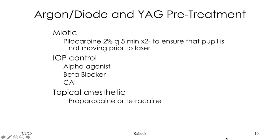Pre-treatment for both lasers: pilocarpine 2%, Q5 times 2, to ensure the pupil is not moving prior to laser. For pressure control, you can use alpha agonists, beta blockers, or carbonic anhydrase inhibitors. For topical anesthetics, we typically use proparacaine, though tetracaine can also be used.